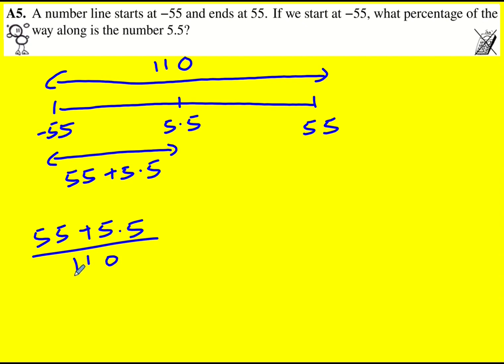The nice thing about this is that I can actually see that 11 or 1.1 goes into each one. So if I divide by 11, then I'm going to get 5 plus 0.5 all over 10,